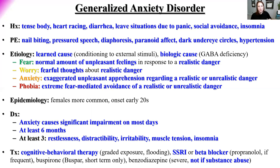Females are more commonly affected by generalized anxiety disorder, typically presenting in the early twenties. The diagnostic criteria: anxiety causes significant impairment on most days, present for at least six months — that's the key timeline — and the patient must have at least three of the following symptoms: restlessness, distractibility, irritability, muscle tension, and insomnia.